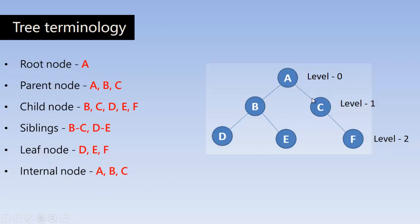Internal nodes are the nodes which have at least one child. Here, A, B, C are the only internal nodes. You can't say D, E, F are the internal nodes because they don't have any children. So A, B, C are the only internal nodes. You can say any node having at least one child.